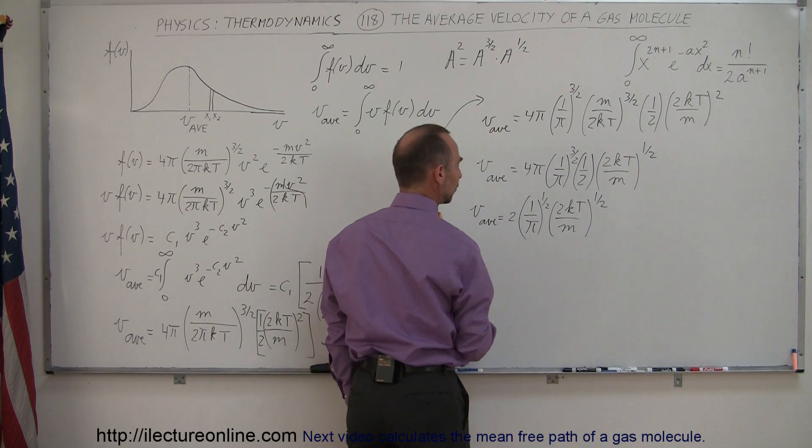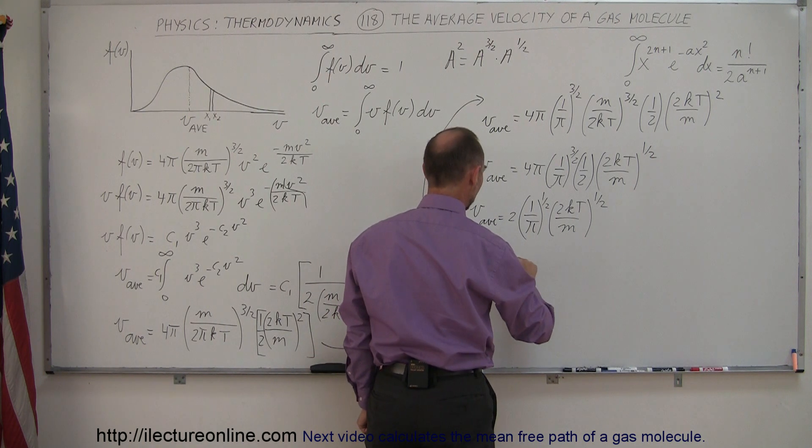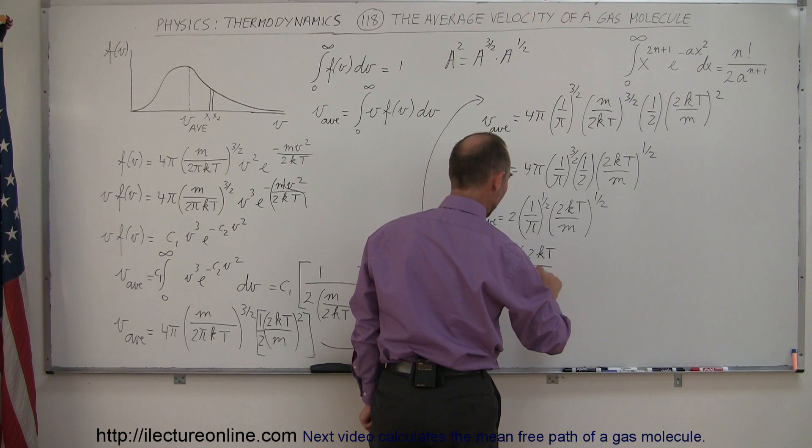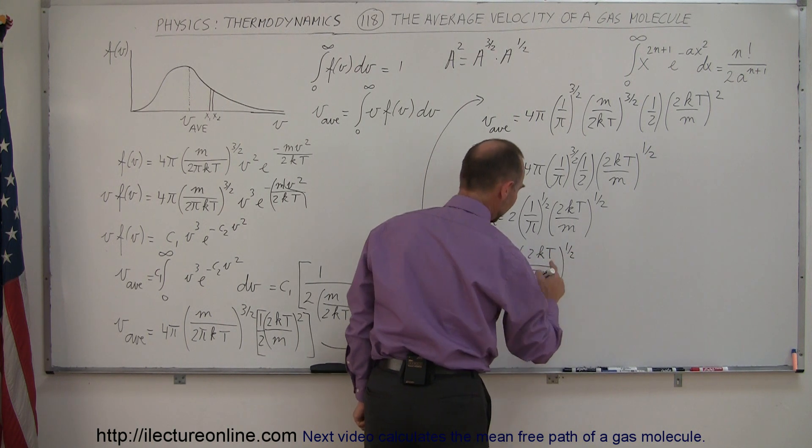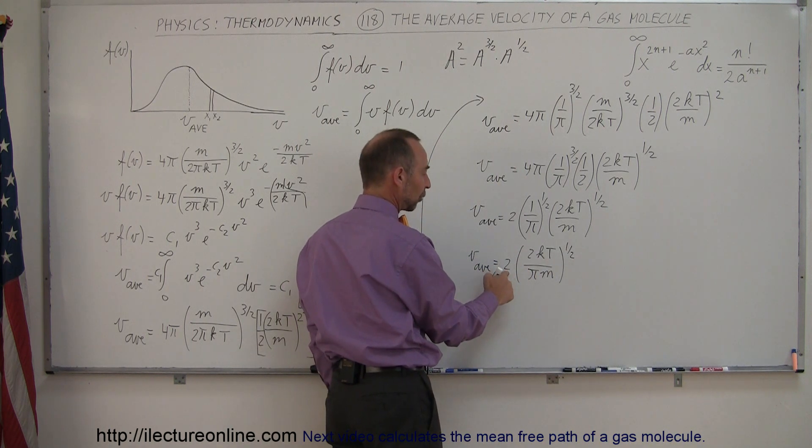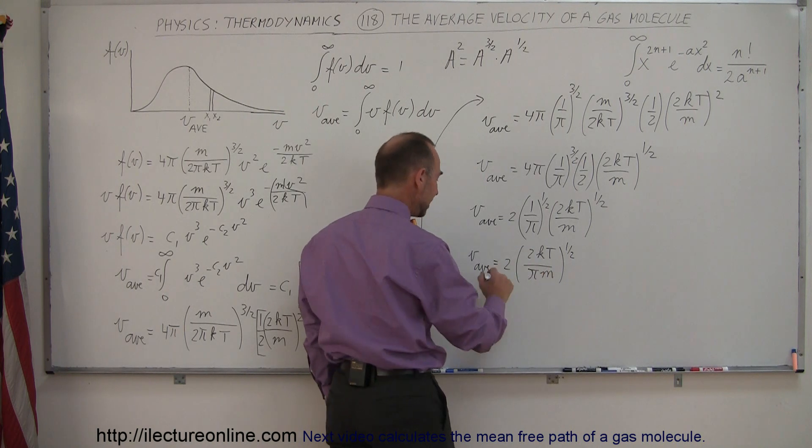And so I have V average is equal to 2 times 2KT over πM to the 1 half power, of course that's the square root. And then if I bring this 2 in here, then I have to of course square that to bring it inside the square root, that becomes a 4 times 2 is 8.